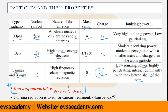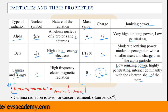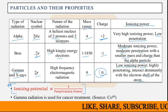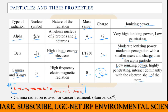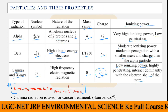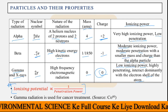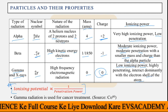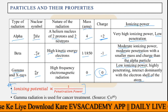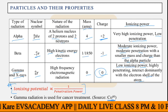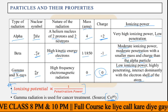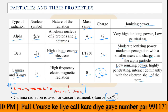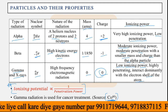Gamma radiation is used for cancer treatment — you may have heard of radiotherapy. In radiotherapy, gamma radiation is used, and to generate gamma particles, the radioactive material cobalt-60 is used. Cobalt-60 continuously emits gamma radiation, which is used in radiotherapy. This is sometimes asked in examinations, so remember it.